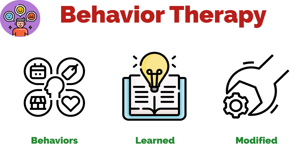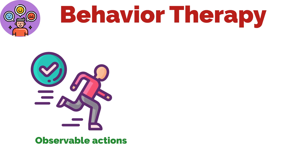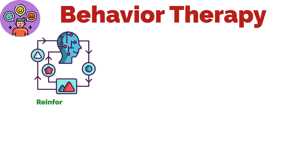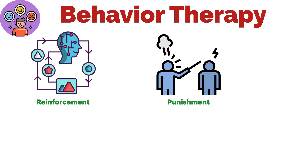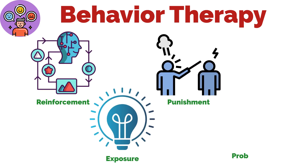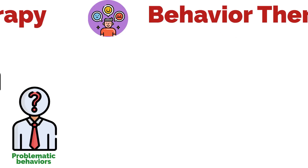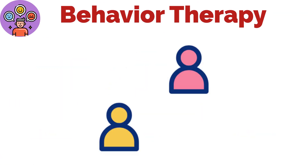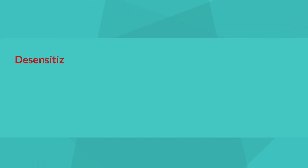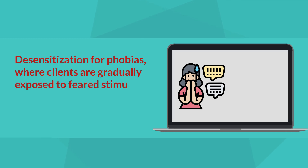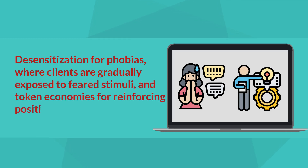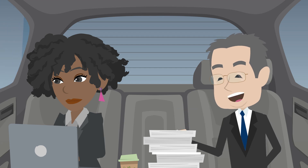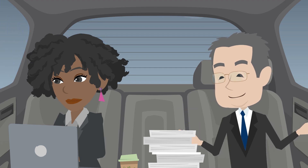Behavior therapy focuses on observable actions rather than internal thoughts. Therapists use techniques like reinforcement, punishment, and exposure to help clients change problematic behaviors. Behavior therapy is effective for issues such as phobias, OCD, and addiction, emphasizing measurable changes in behavior. Common techniques include systematic desensitization for phobias, where clients are gradually exposed to feared stimuli, and token economies for reinforcing positive behaviors.